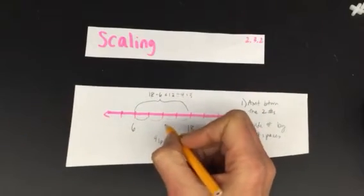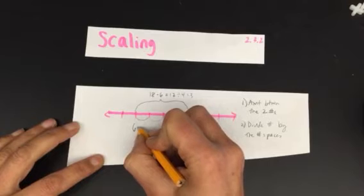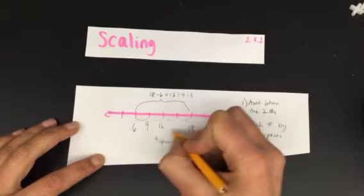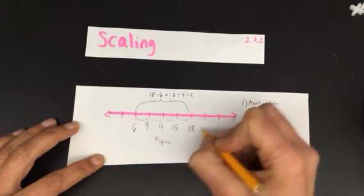So each of these spaces is a total of 3, so 6 plus 3 is 9, 9 plus 3 is 12, 12 plus 3 is 15, 15 plus 3 is 18.